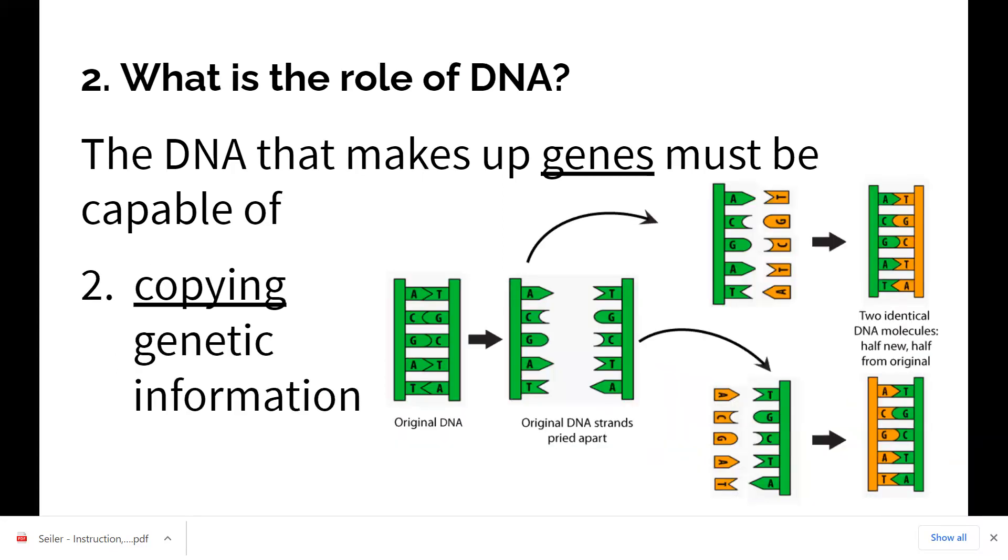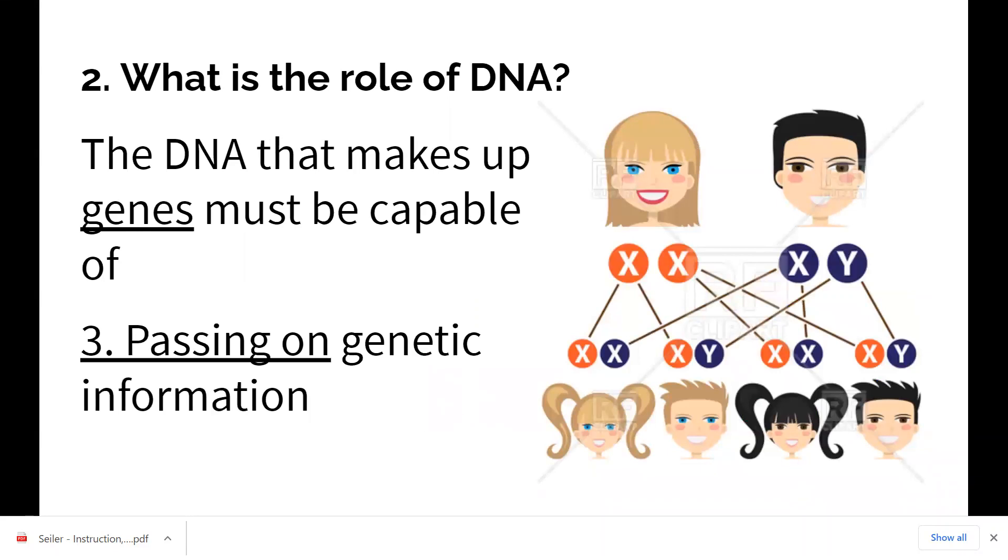The other thing that DNA needs to be able to do is not only store it, but then also copy it. Because remember, if you're going to make a new cell, each cell needs a copy of the entire DNA of that organism. So you have to be able to copy the DNA as well. And then third, you have to be able to pass on genetic information with DNA. So one, we got to store that information in the first place. Two, we have to be able to copy it if we're making new cells. But three, if an organism wants to have offspring, it needs to be able to pass a portion of that DNA onto its offspring.